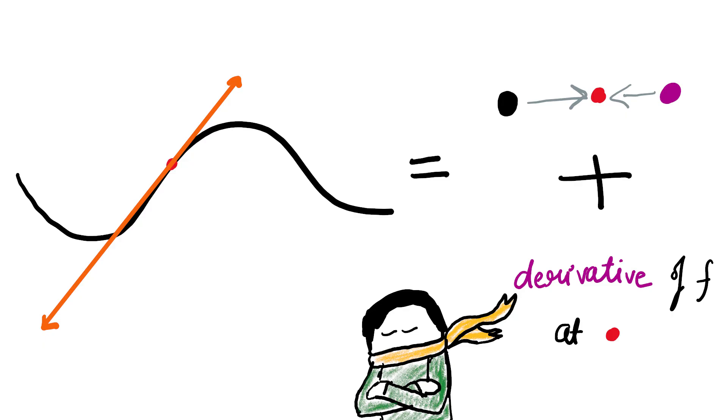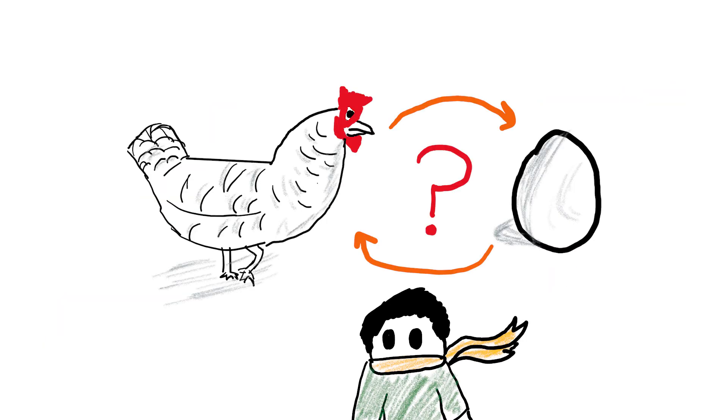So to even define a tangent line, we have to use derivatives in the first place. Which makes this all circular, right?